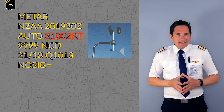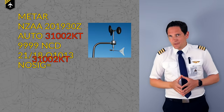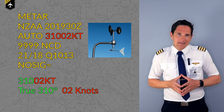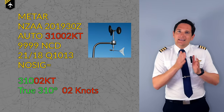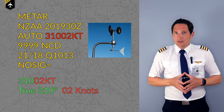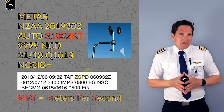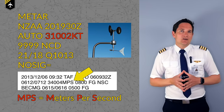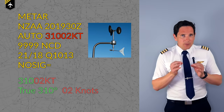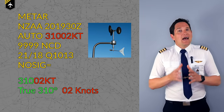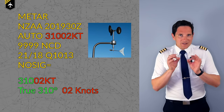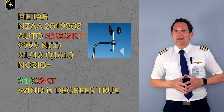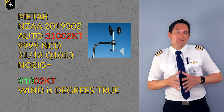Next up we have the wind at the time of issue or measurement. The first three digits give the true wind direction with the following two showing the wind speed. The unit is shown as KILOTANGO meaning knots, but it is sometimes in other units such as meters per second denoted as MPS, which can be found in mainland China or Russia. In this example we have a wind of 310 degrees at a speed of 2 knots.